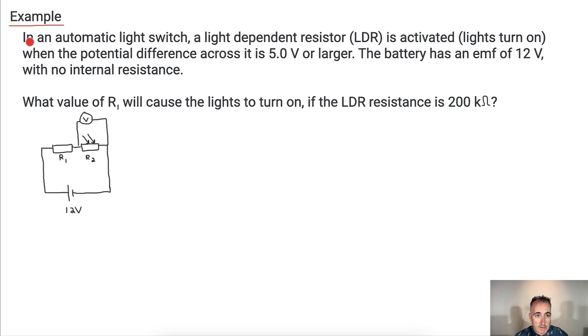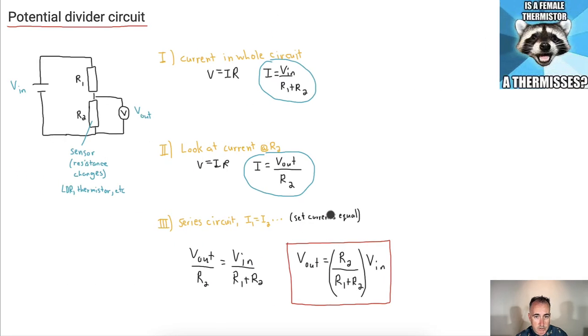Now let's do an actual example. So we have an automatic light switch. We have an LDR that's activated. It turns the lights on in the house or something when the potential difference across it is 5 volts or larger. Here's your symbol for a thermistor. I'll label these like I did before. I'll call this one V_out. We know that the battery has an EMF of 12 volts, it has no internal resistance which is nice.